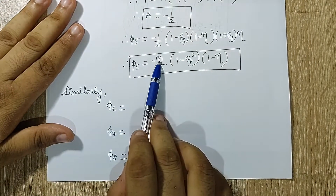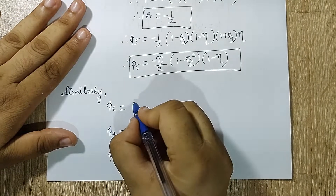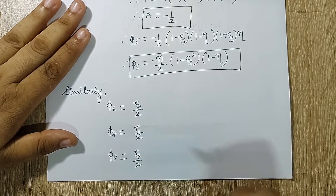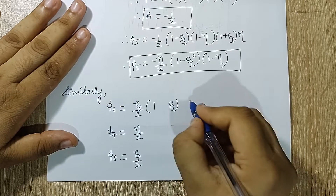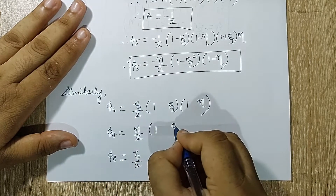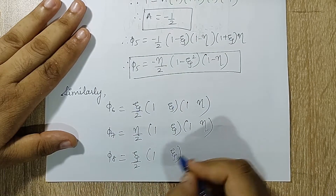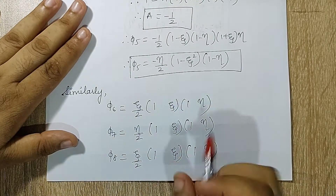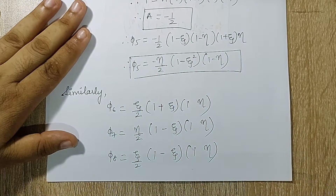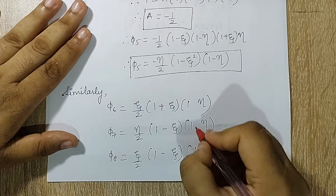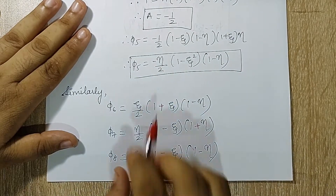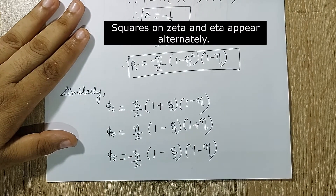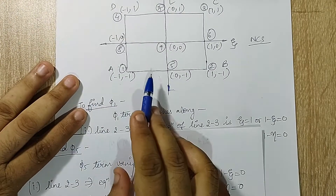For nodes six, seven, and eight, the prefactors appear as η/2, ζ/2, η/2, and ζ/2 alternately, each with two brackets relating (1 ± ζ) and (1 ± η). Filling in the signs: for φ₆ it is minus, then plus-minus-minus; for φ₇ minus-plus-minus-minus. Note there is a negative sign at specific positions — this is something you need to remember.